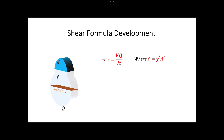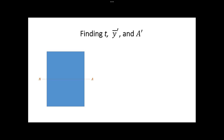Having understood the development of the shear formula, let us discuss how to find its parameters for different scenarios, starting with the most basic rectangular cross-section. If we need to find the transverse shear stress at point P, then parameter T in the shear formula will be the width of the rectangle, and here will be area A' and Y bar' used to determine parameter Q.